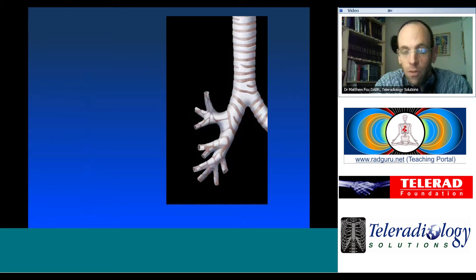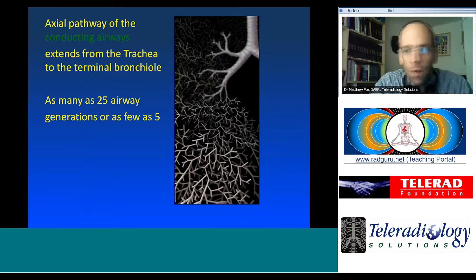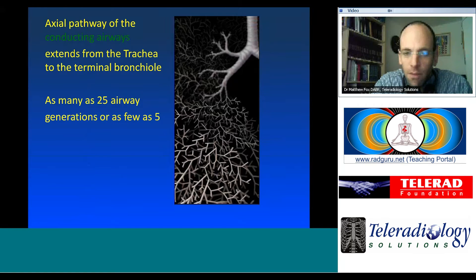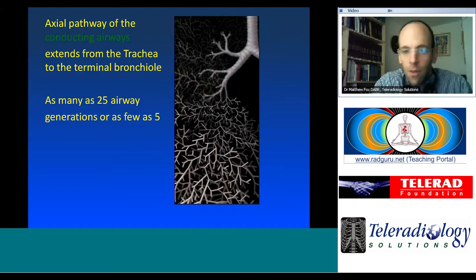The large airways won't be covered today — we're going into the smaller airways. The axial pathway of the conducting airways extends from the trachea down to the terminal bronchiole. There can be as many as 25 different generations of branching, or as few as five, depending on how close the terminal bronchiole is to the pulmonary hilum.